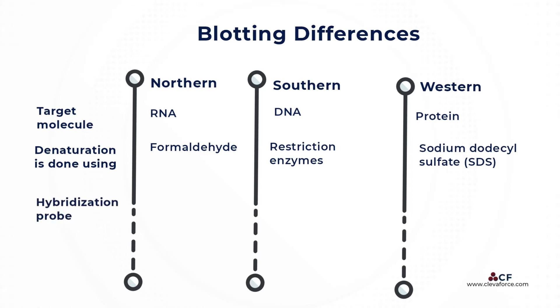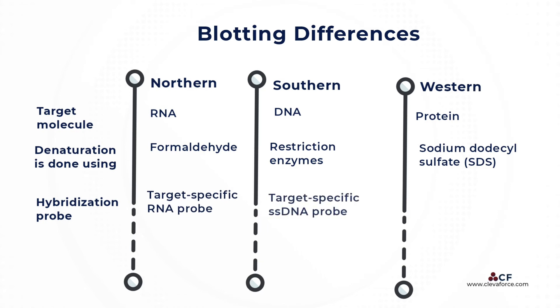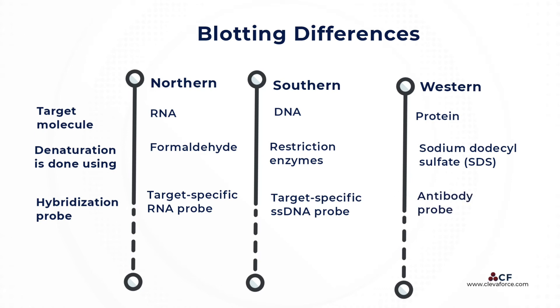The hybridization probe used in northern blotting is a target-specific RNA probe. For southern blotting, a target-specific single-stranded DNA (SS-DNA) probe is used, and in western blotting, an antibody probe is used.